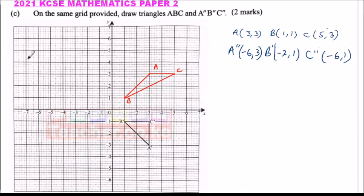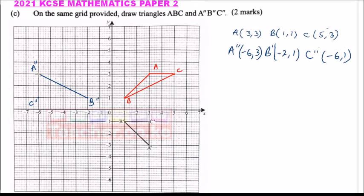For triangle A''B''C'': A'' is at (-6, -6), B'' is at (-2, 1), and C'' is at (-6, 1). Use a ruler to join the three points — A''B'', A''C'', and B''C''. These are the two triangles you are supposed to draw to earn two marks.